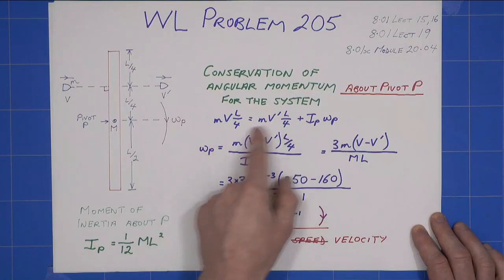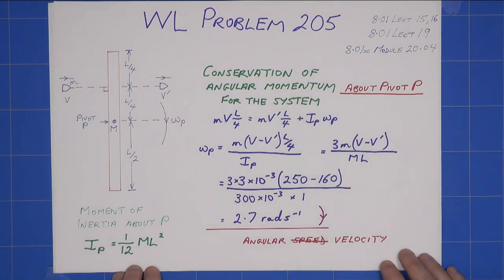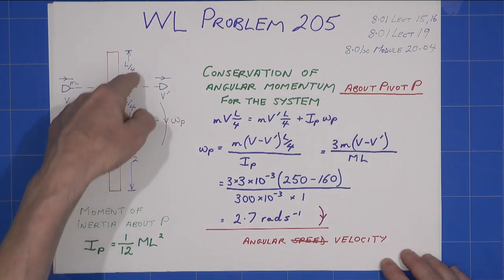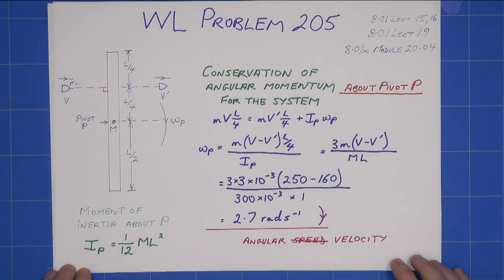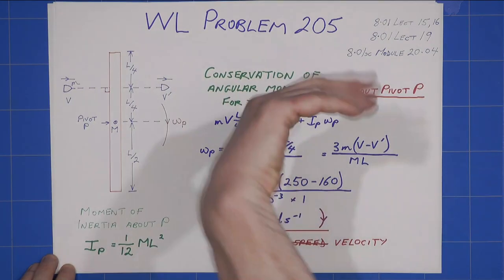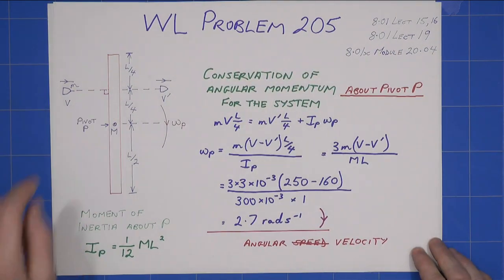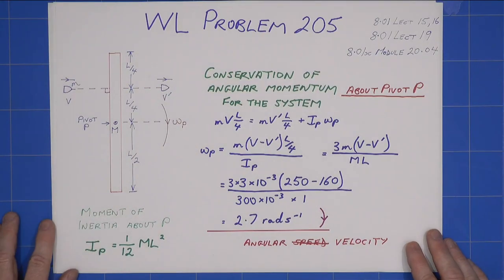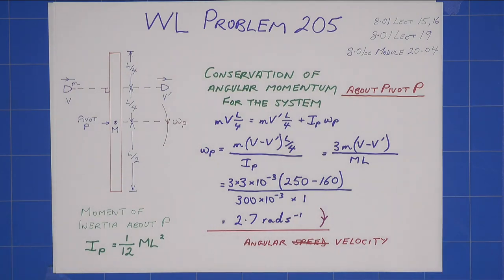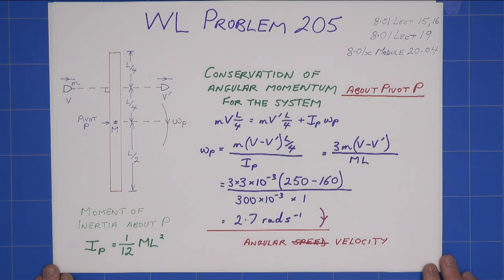Substituting that in for omega p, I get this expression, which reduces to that, feed in the values, and I get a very convenient 2.7 radians per second, which is obviously in this direction. Angular speed, although strictly, we should say all these are vectors, and it's an angular velocity that way, if that makes sense to you down there. But because it's really a one-dimensional problem, we can ignore vectors on this occasion. That's it. Final answer, 2.7 radians per second in a clockwise direction, angular velocity. Thank you.